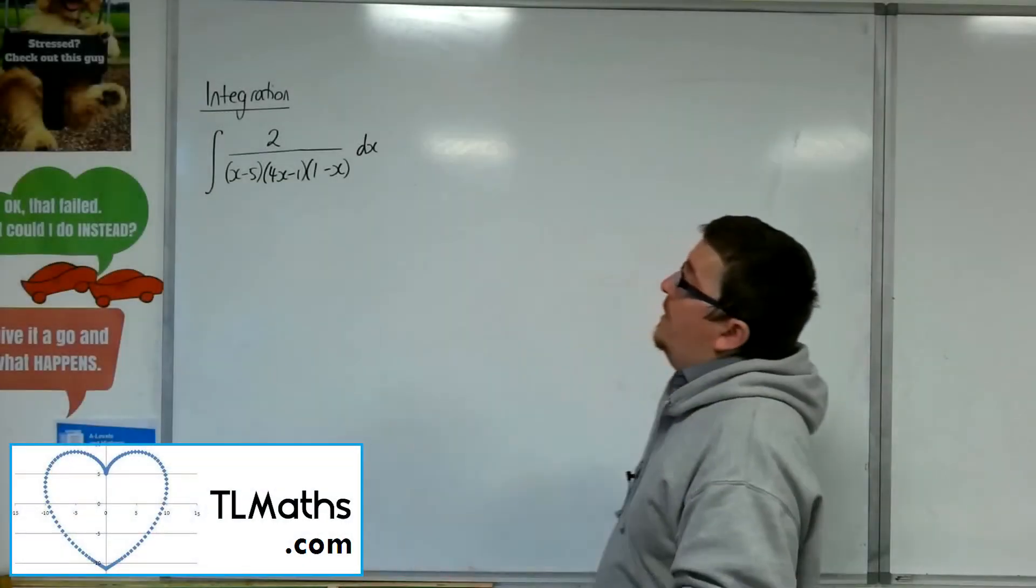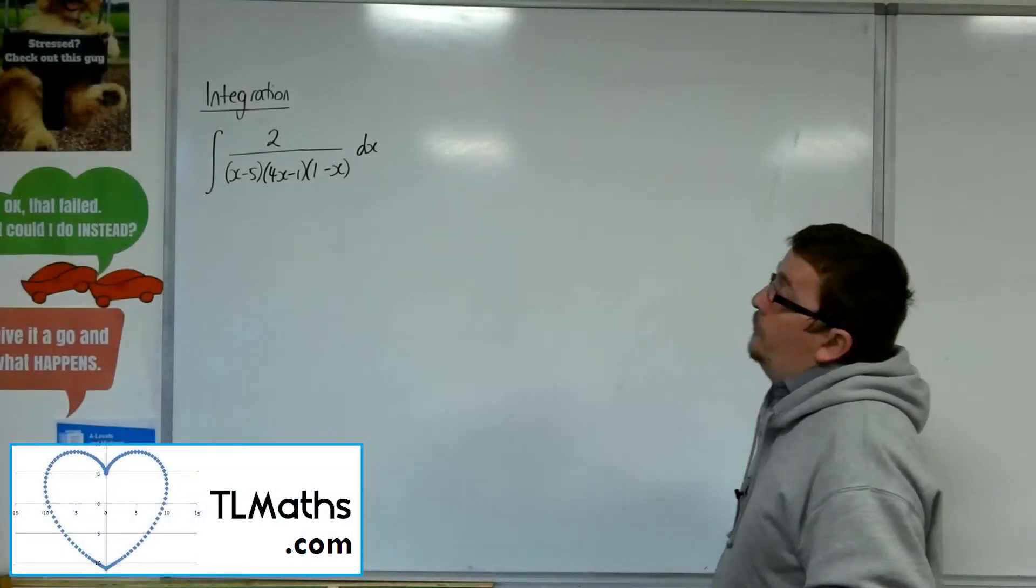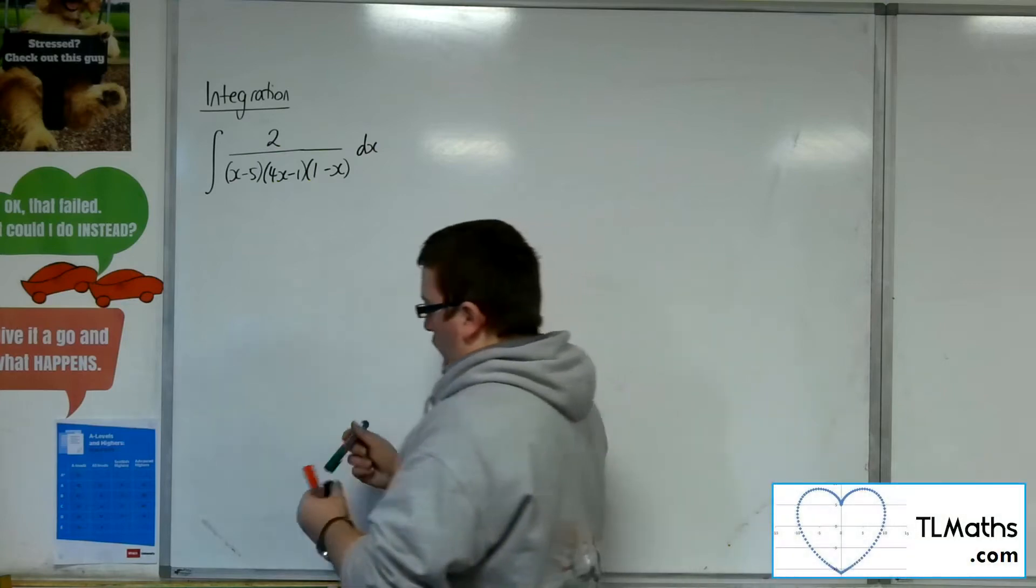In this problem we're going to integrate 2 over (x-5)(4x-1)(1-x).